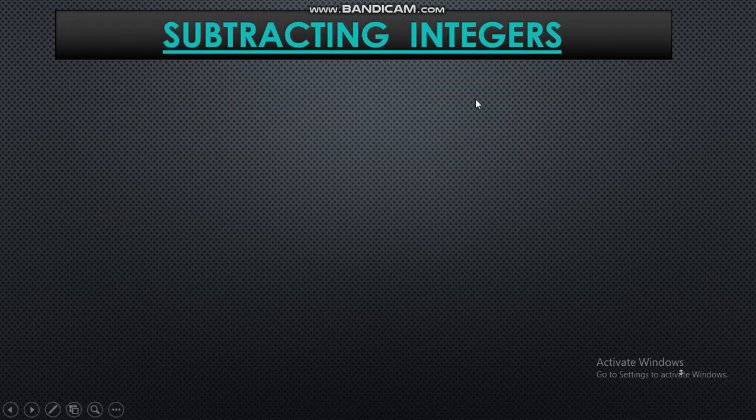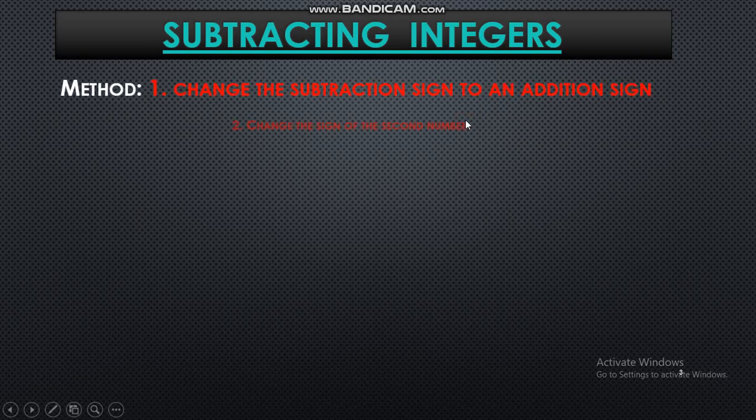So let's go to the next topic subtracting an integer. Now same here also but little bit tricky. While doing the subtraction we have to follow some method. In that first you have to change the subtraction sign to an addition sign. Then change the sign of the second number. If your second number is positive then make it negative. If it is negative then make it positive. And then just apply the rule of addition. Clear?